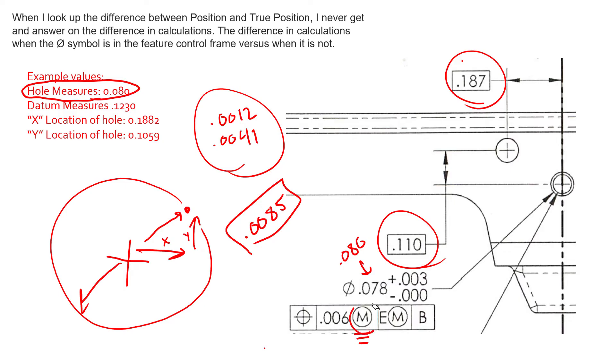So 0.080, our tolerance value is 0.078 plus three thousandths minus nothing. So at MMC we get six thousandths position, but if we deviate away from MMC we get bonus in that same amount that we deviated. The MMC value for this is 0.078 and the LMC is 0.081.